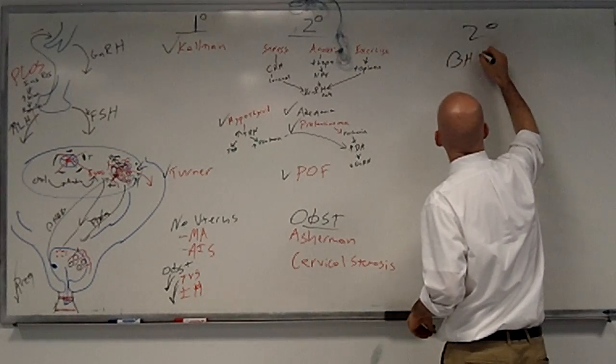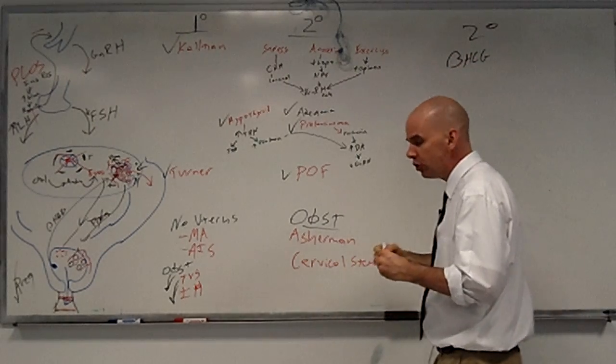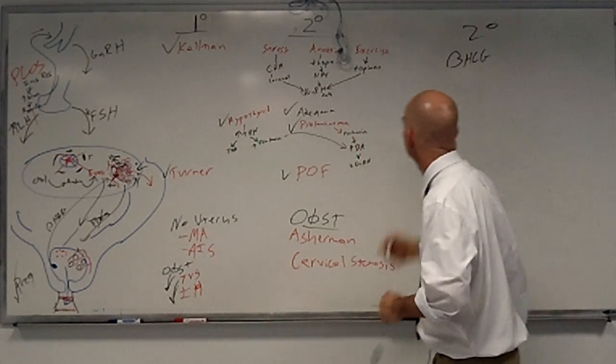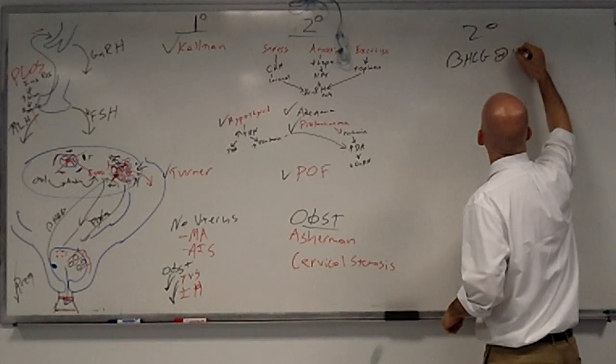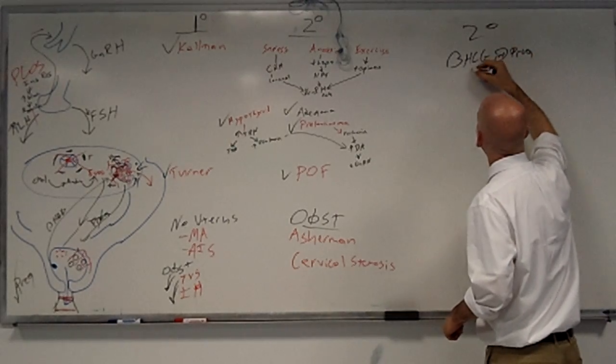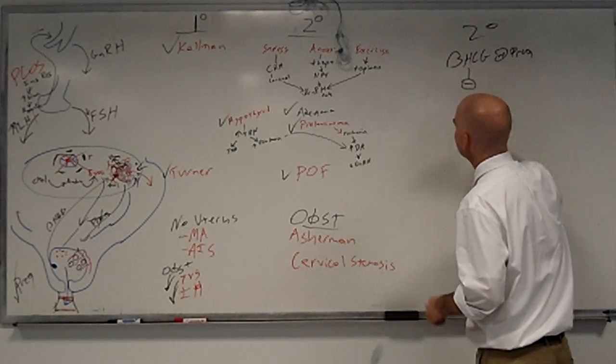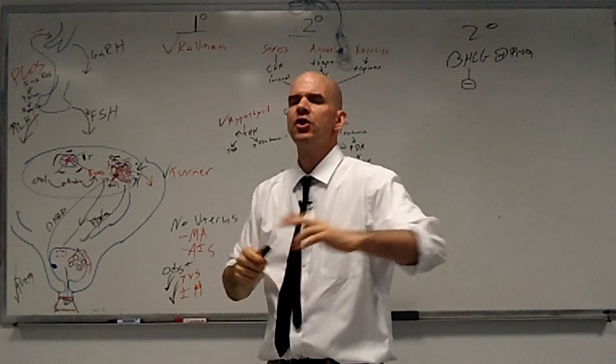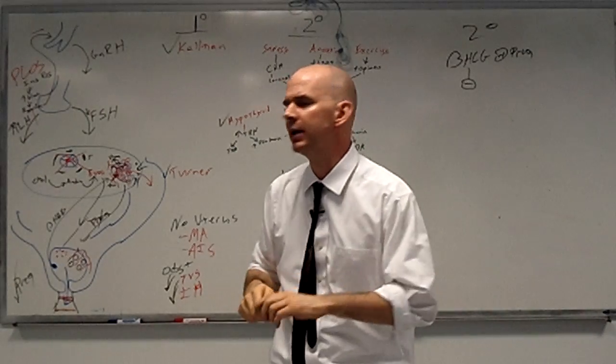Because the number one reason a patient who used to have periods is going to stop having them is pregnancy. If beta-HCG is negative, then what you want to do is check prolactin and check TSH.